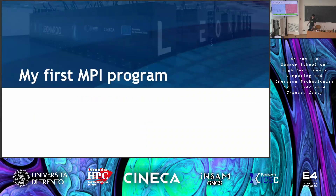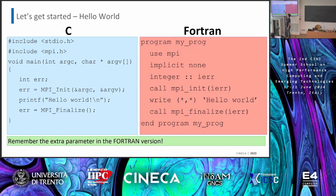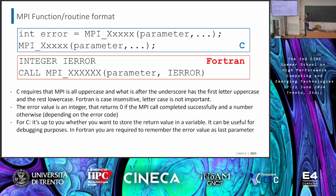My very first MPI program, written here in C and in Fortran. I told you to start with the header — 'include mpi.h' for C, 'use mpi' for Fortran. You declare an integer for the error and two integers: one for the number of processors and one for my specific rank. MPI_Init is called with argc and argv, and we can store the return value for error checking. Then there are other things we are getting to in a minute.